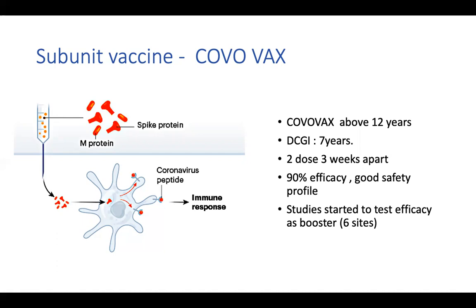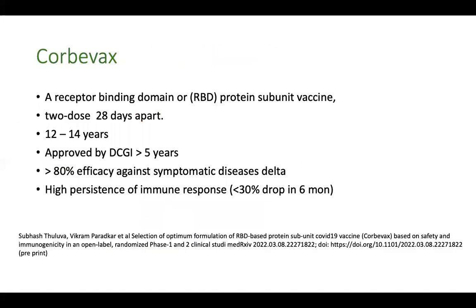Covovax and Corbivax are currently advocated for children above 12 years, even though licensed for those above seven years. Two doses need to be given three weeks apart for Covovax, and four weeks apart for Corbivax. The dose schedule is easy to remember - all three vaccines used in children, Covaxin, Covovax, and Corbivax, require two doses three to four weeks apart.